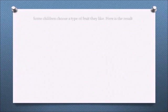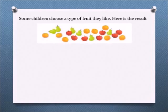Here is an example. Some children choose a type of fruit they like. Here is the result. There are pear, orange,